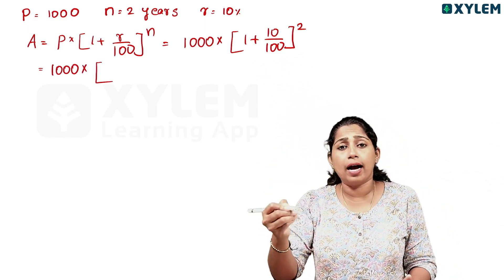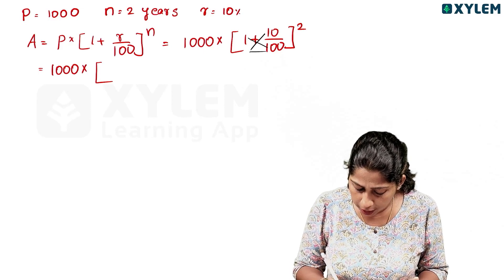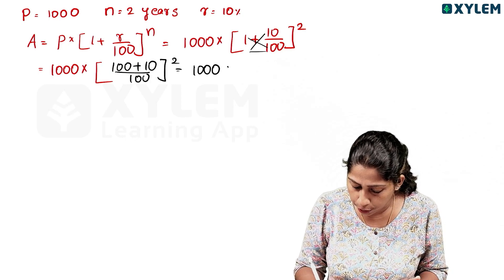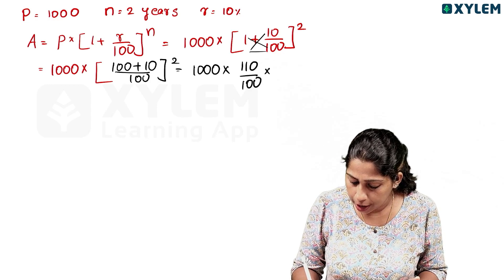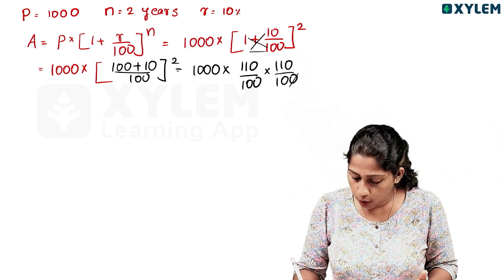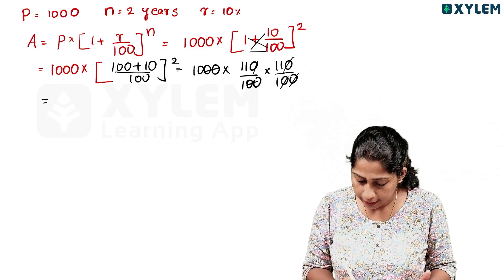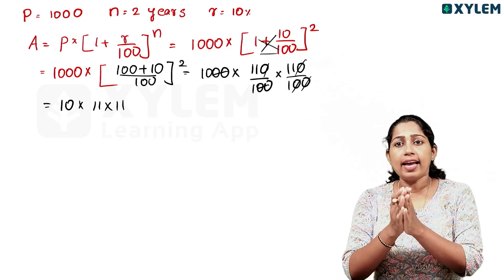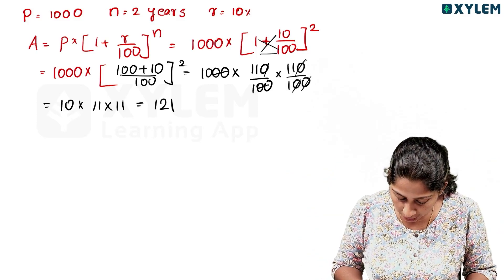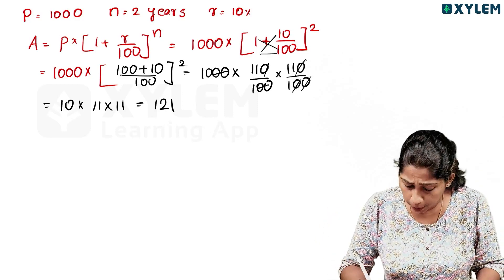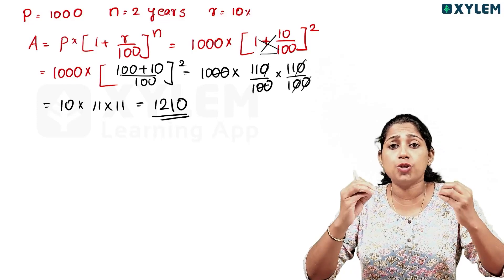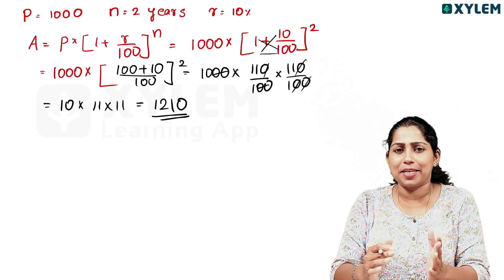So: 1000 into 1 plus 10 by 100, to the power 2. Cross multiply: 100 plus 10 divided by 100, whole to the power 2 — that is 1000 into 110 divided by 100, into 110 divided by 100. We cancel the zeros: 10 into 11 into 11. The final answer is 11 into 11 equals 121, so 10 multiplied by 121 gives us Rs. 1210.